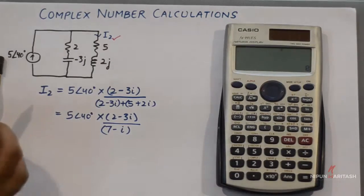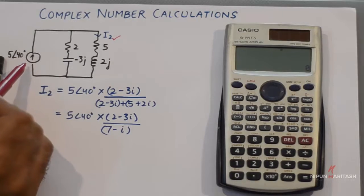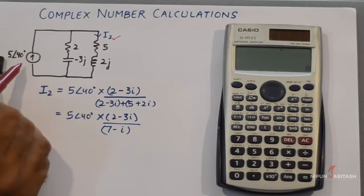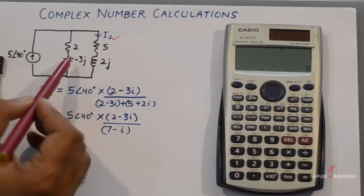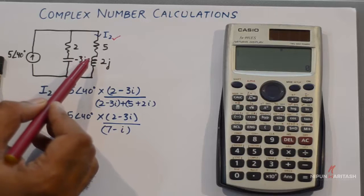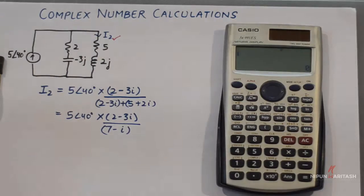We have the total current given as 5 angle 40 degrees, which is represented in polar form. The impedances of the branches are represented in rectangular form.